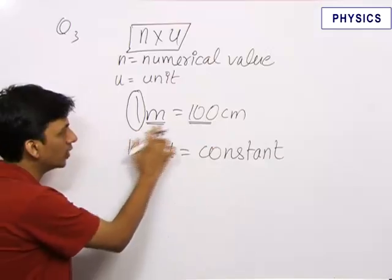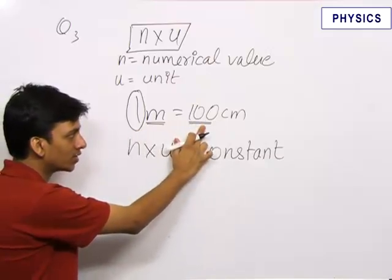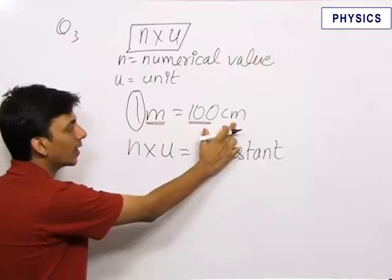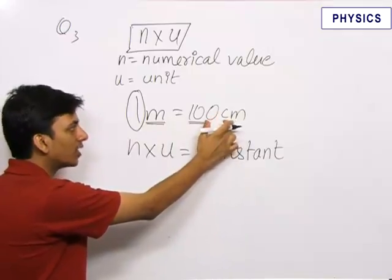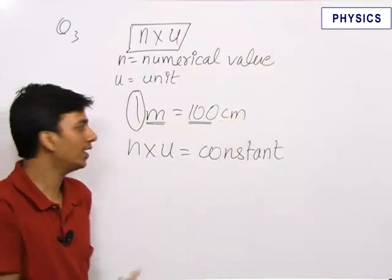Over here, the numerical value has been multiplied by 100 times, but consequently, the unit has been divided by 100 times. Centimeter is 100 times the smaller unit than meters.